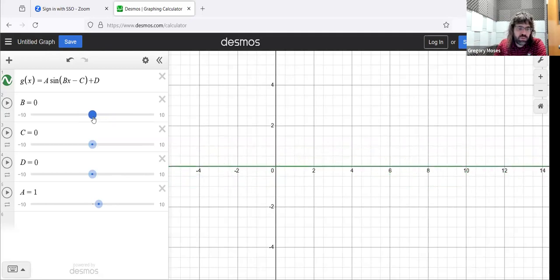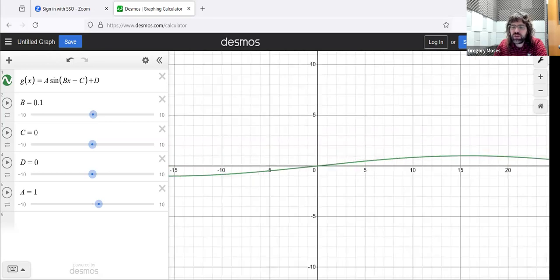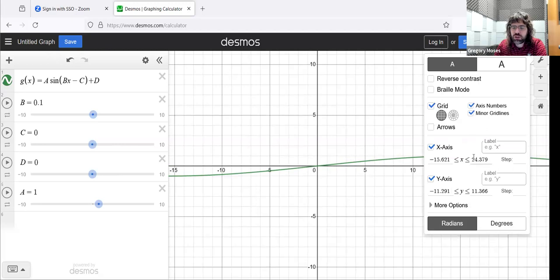The closer B is to zero, the bigger the period. Remember that the period is how long it takes the function to start to repeat.